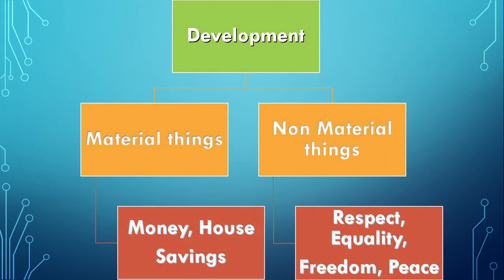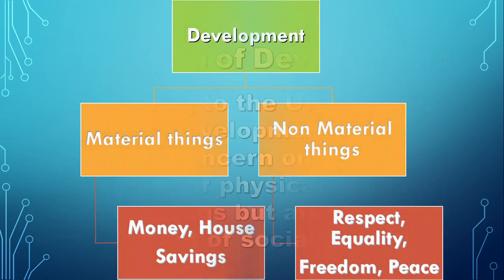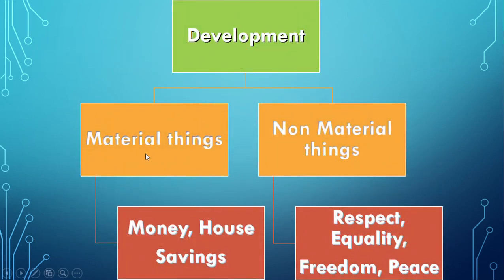Development is based on two aspects: one is material things, like money, house, savings, and others; and the other is non-material things, like respect, security, equality, freedom, peace, and so on. Let us talk about development on the basis of these two aspects — material things and non-material things.